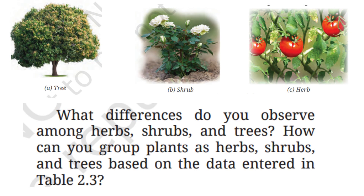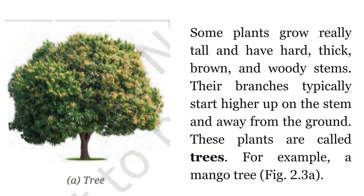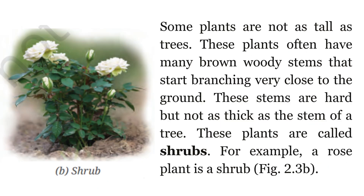So what differences do you observe among herbs, shrubs and trees? Some plants grow really tall and have hard, thick, brown and woody stems. Their branches typically start higher up on the stem and away from the ground. These plants are called trees — for example, the mango tree. But some plants are not as tall as trees. These plants often have many brown woody stems that start branching very close to the ground. These stems are hard but not as thick as the stem of a tree. These plants are called shrubs — for example, the rose plant.